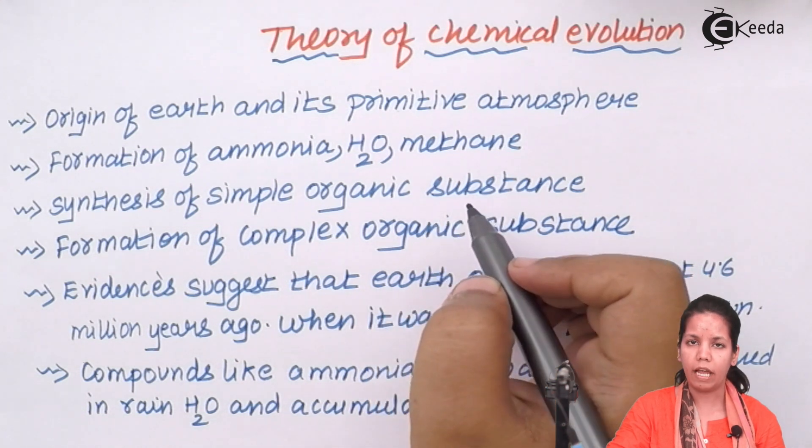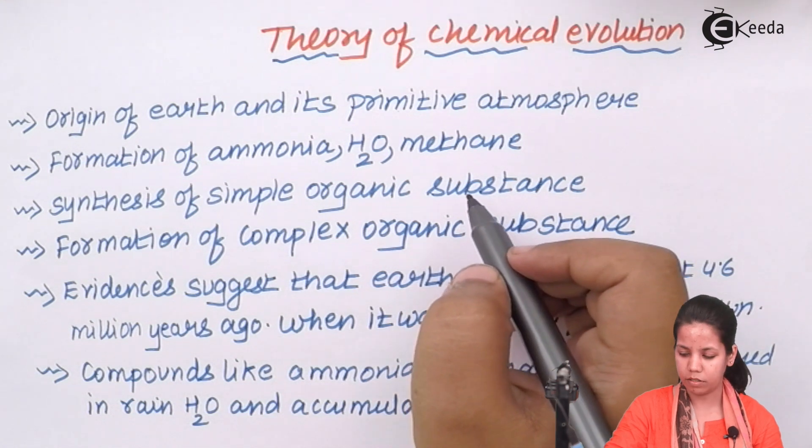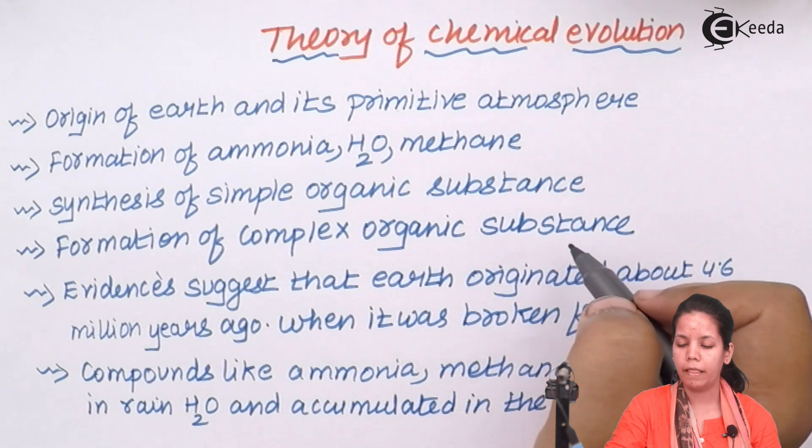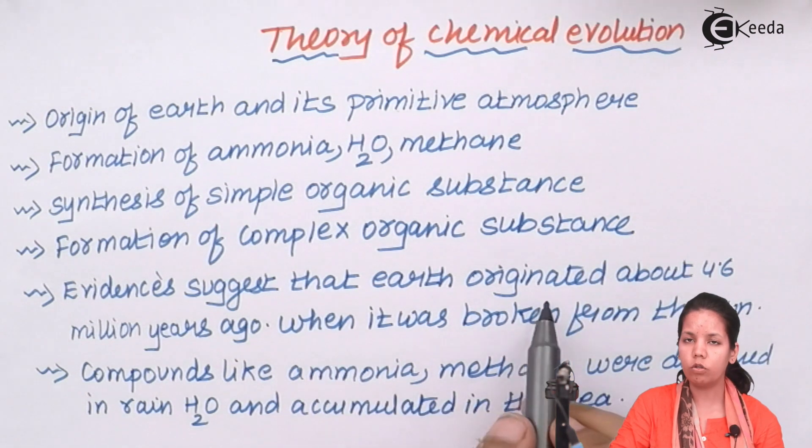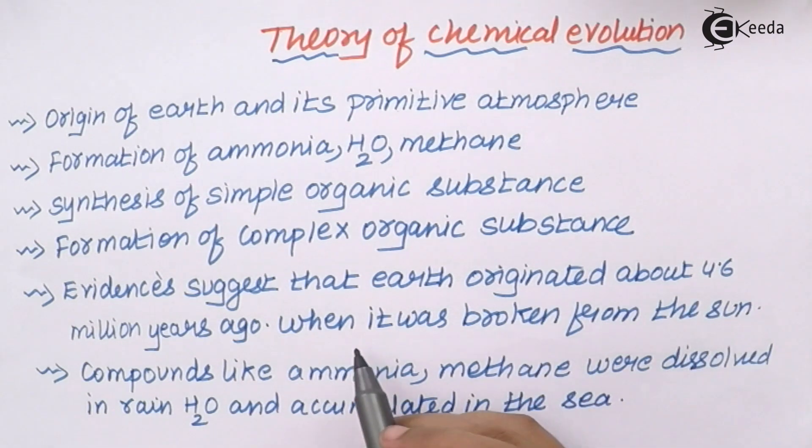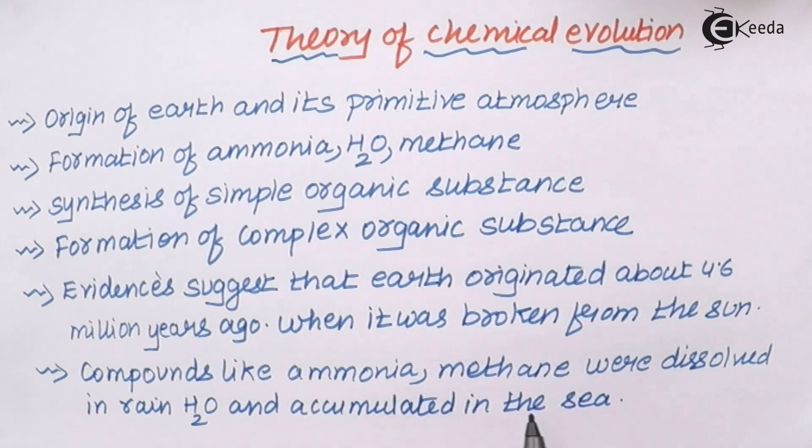Third, the synthesis of simple organic substances in the atmosphere as well as in organisms. And lastly, formation of complex organic substance or greater molecules. Now evidence suggests that earth originated about 4.6 million years ago when it broke from the sun and cooled and the atmosphere on earth formed. Now compounds like ammonia, methane were dissolved into the rain and this accumulated in the sea.